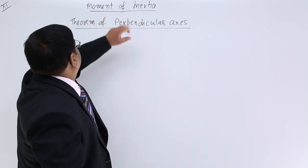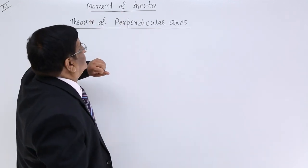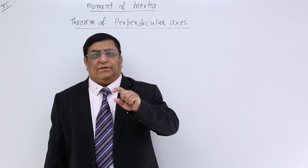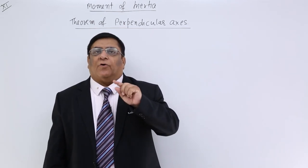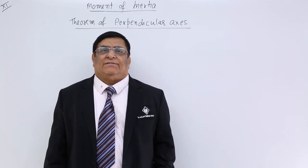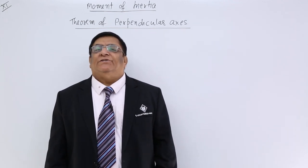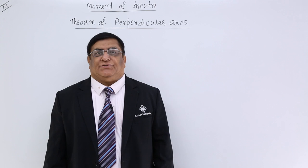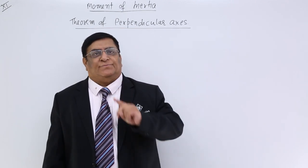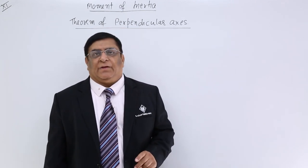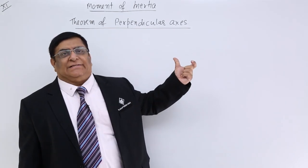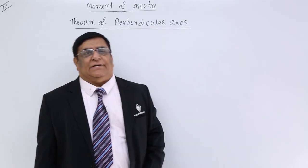What we are studying is moment of inertia — to find out the moment of inertia of a body for different types of axes, and when we change the axis, how much the moment of inertia will change. To calculate it we take help of two theorems, and one theorem is the theorem of perpendicular axis, which we will discuss first.